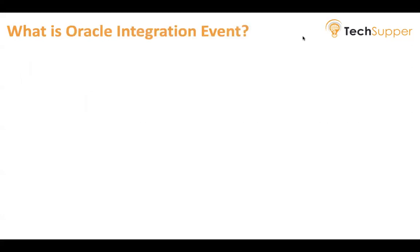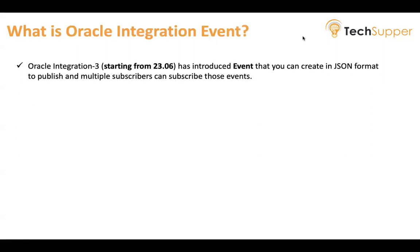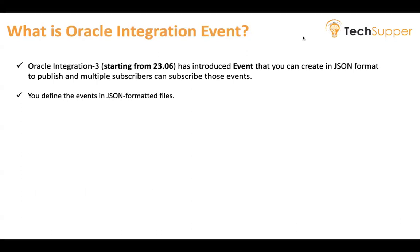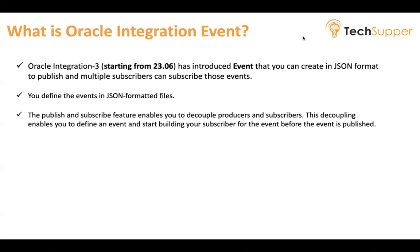What is an Oracle Integration event? This is a new feature introduced in Oracle Integration 3, version 23.06. You can create events in JSON format of your choice — you define a payload specifying what type of data will be sent when the event is published. Multiple subscribers can subscribe to those events. You define the events in JSON formatted files, and the publish and subscribe feature enables you to decouple producers and subscribers.